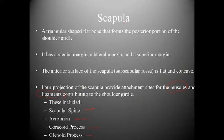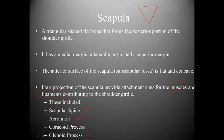The scapula is a triangular-shaped, flat bone that forms the posterior portion of the shoulder girdle. It has a medial margin, lateral margin, and superior margin — no inferior margin, as the medial and lateral borders come together to form a point called the inferior angle.